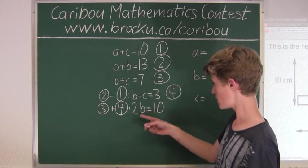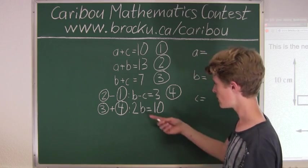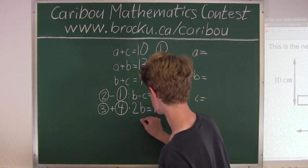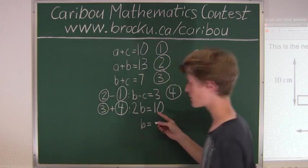Now to get B we will divide both sides by 2, and therefore we will get B equals 10 divided by 2, which is 5.